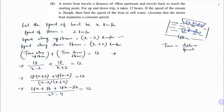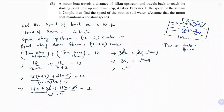On the left side: 18x + 18x = 36x. So 36x = 12(x² − 4). Dividing both sides by 12: 3x = x² − 4, which gives x² − 3x − 4 = 0.